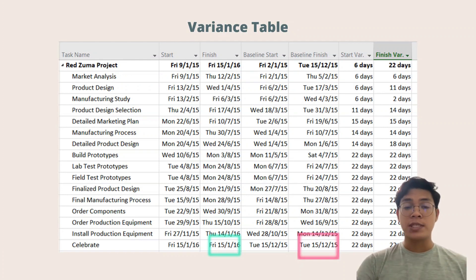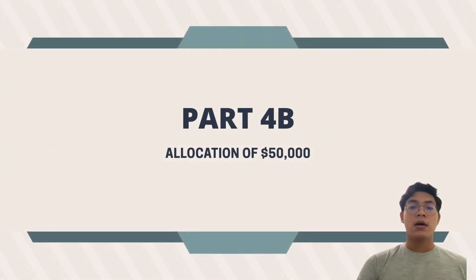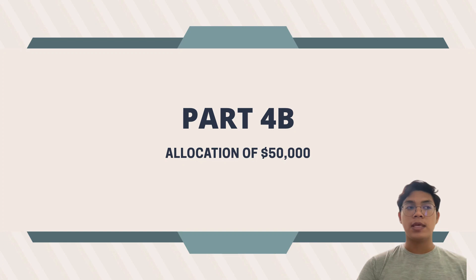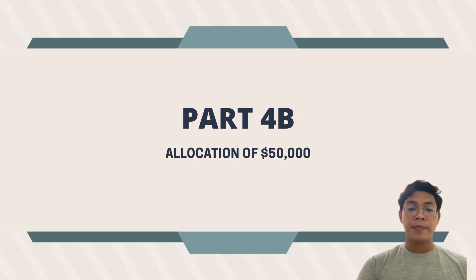Moving to Part 4b, Robin Lane is willing to spend $50,000 from management reserves on reducing shipping time for components and the manufacturing part, with each shipping costing around $25,000. On screen are two variance tables before and after Robin Lane's spending of $15,000.